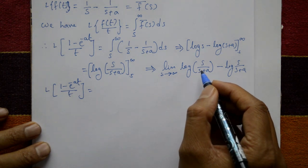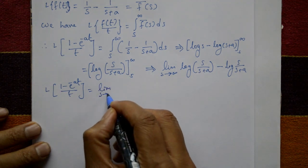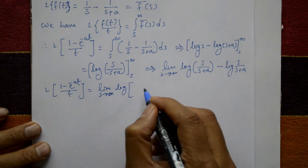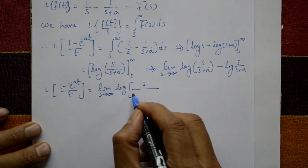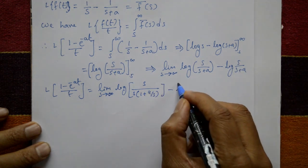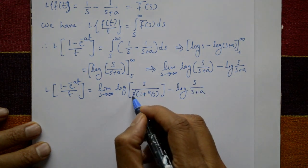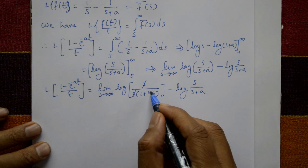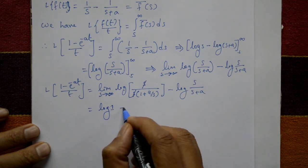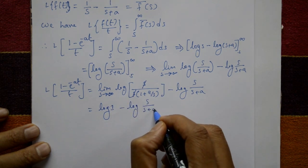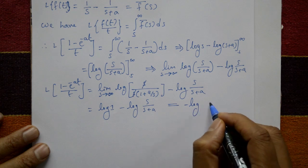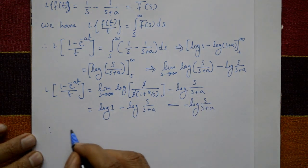For the upper limit, take s common in the denominator: log of s upon s times (1 plus a by s), so s cancels. Applying s tending to infinity, a by s becomes 0, giving log of 1 upon 1, which is log 1 equals 0. So we have 0 minus log of s upon s plus a.